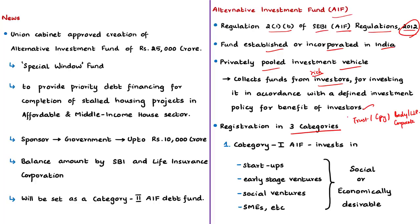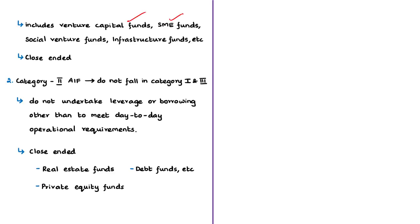The first is a Category 1 alternative investment fund. These are AIFs that invest in startups or early stage ventures, social ventures, small and medium-sized enterprises (SMEs), infrastructure, or other sectors that the government or regulators consider socially and economically desirable. This includes venture capital funds, SME funds, social venture funds, infrastructure funds, and such other funds. Don't go into detail of all these fund types — just remember they come under Category 1 alternative investment funds.